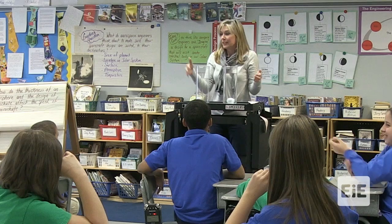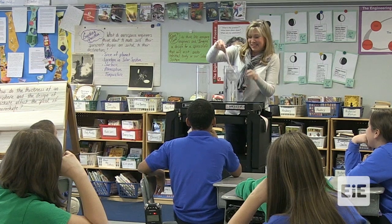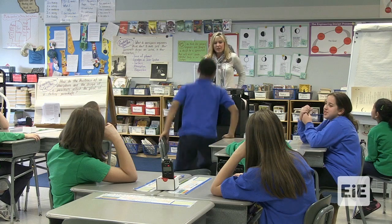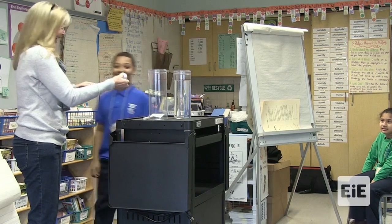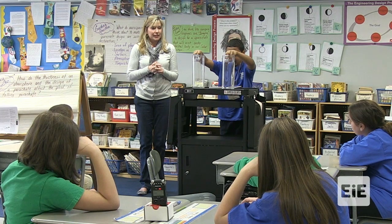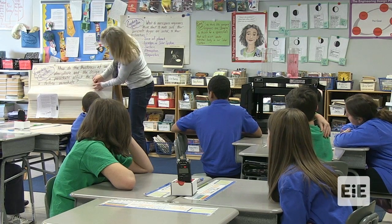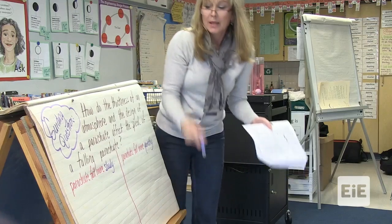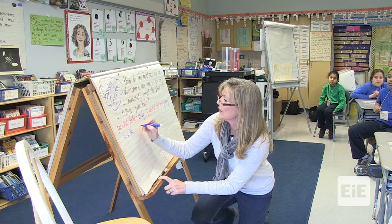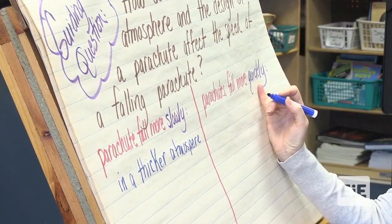Which one fell faster? Let's try that again. We're going to go back to the guiding question and keep thinking about this as we work with these variables today. Parachutes fall more slowly in a thick atmosphere and more quickly in a thinner atmosphere. We got it now.